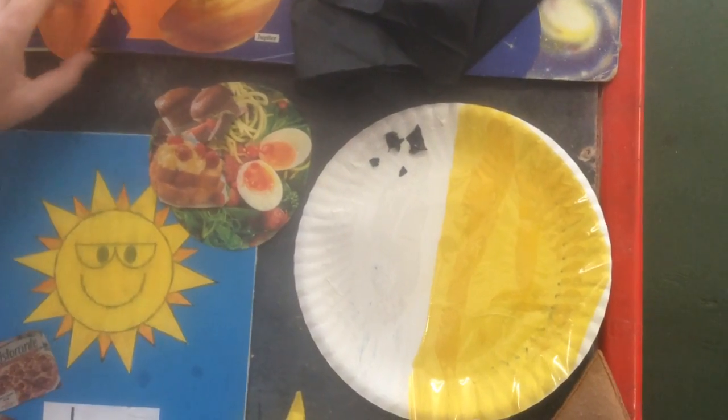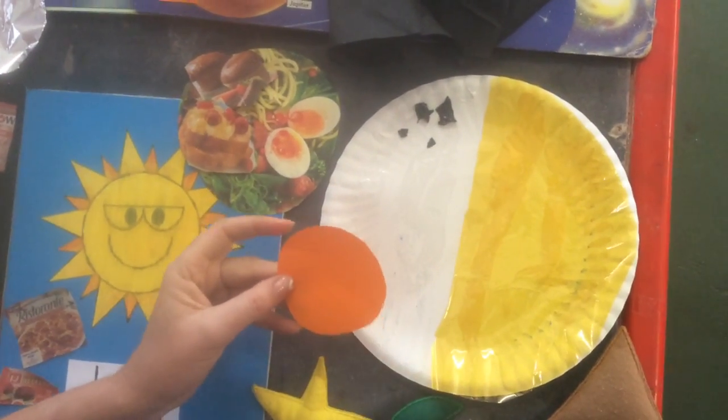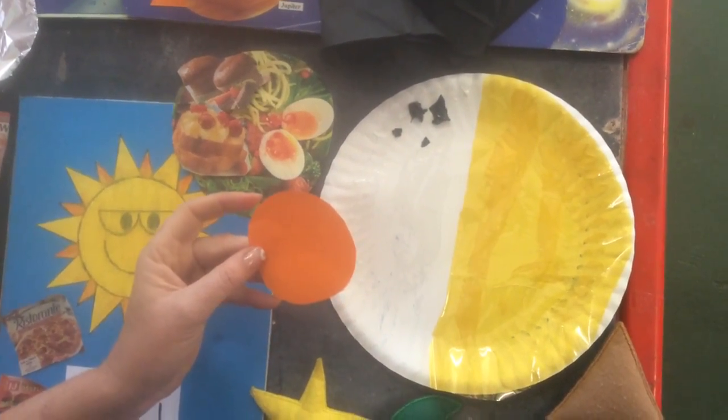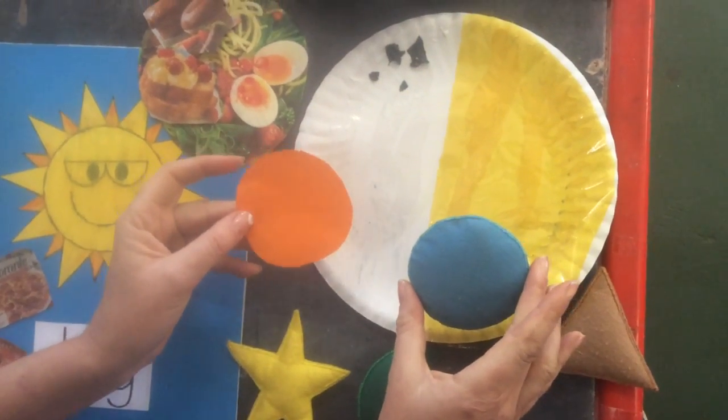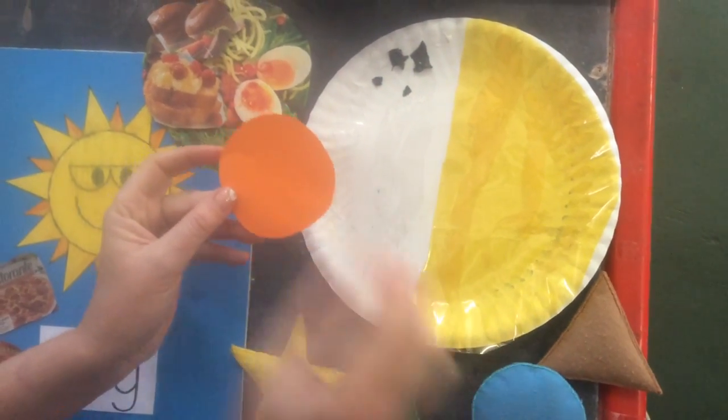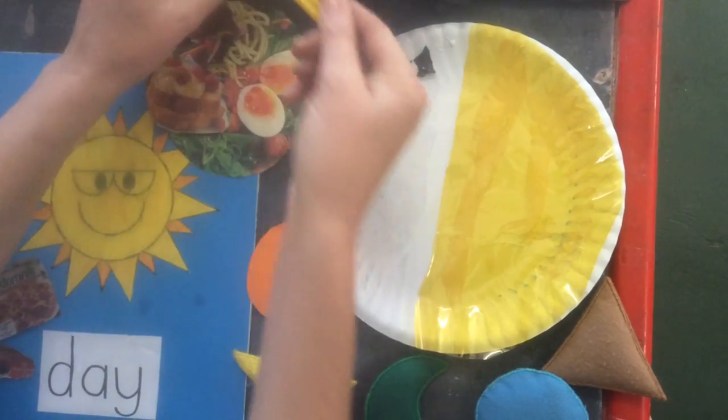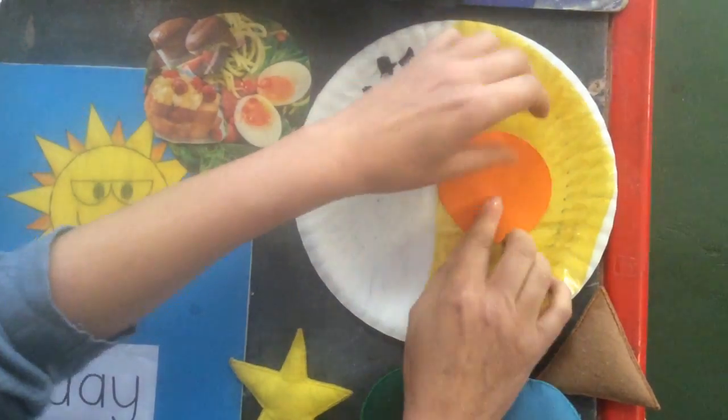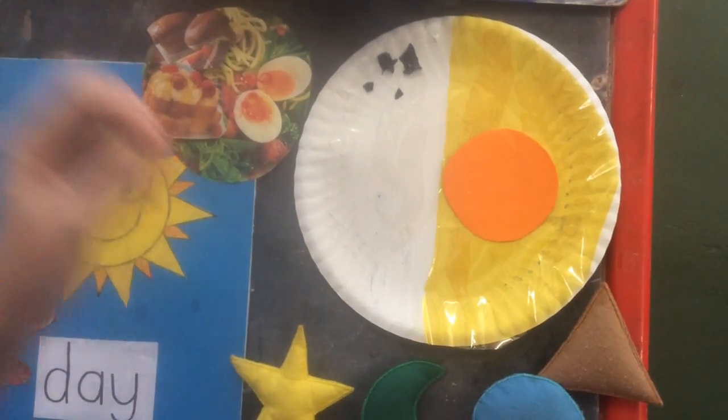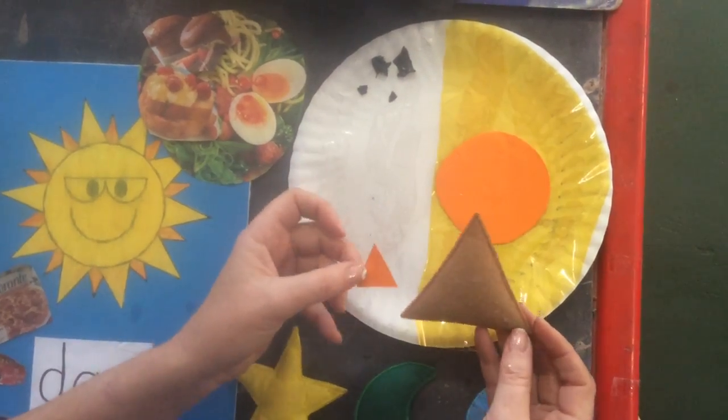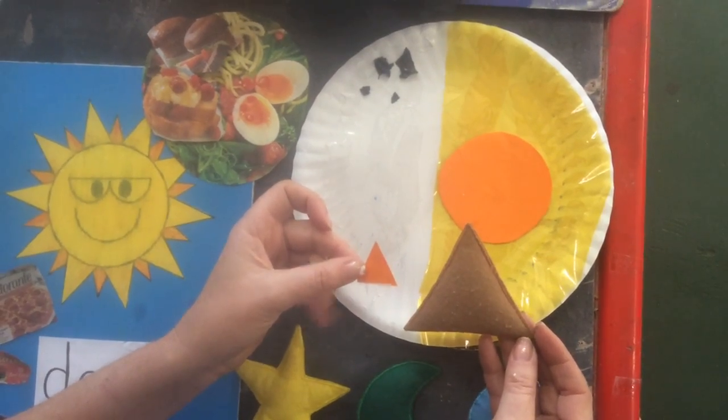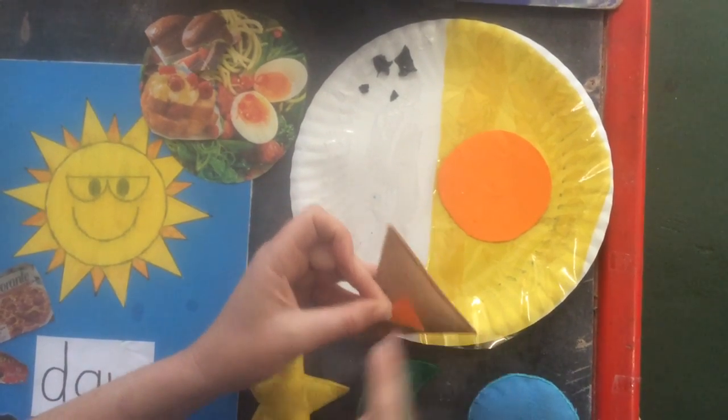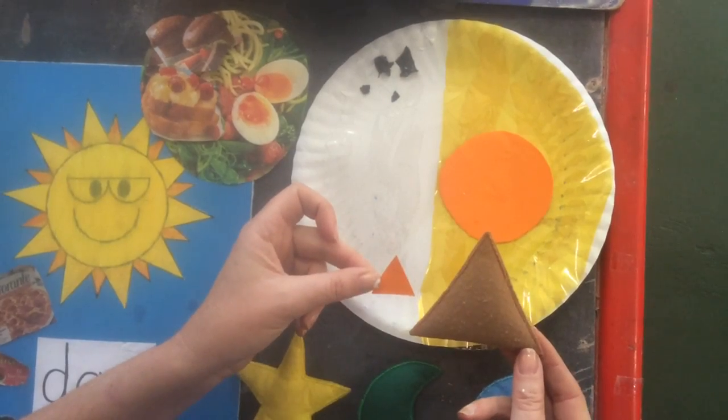Then we're going to make a sun and we're going to use shapes. I've used a circle shape to make the sun, so I get my glue and I put it there. And I've got a circle for the sun, and around the sun I'm going to use a shape called a triangle with three sharp edges and three sides.